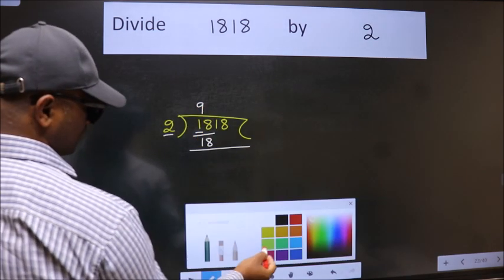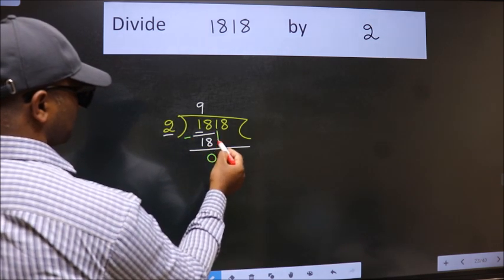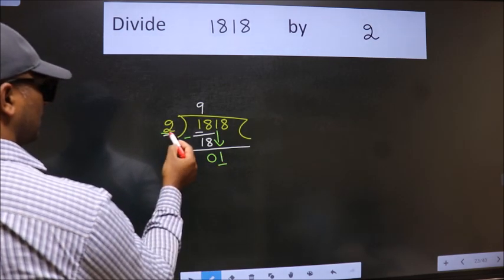Now we should subtract. We get 0. After this, bring down the beside number. So, 1 down. Now here we have 1, here 2. 1 is smaller than 2.